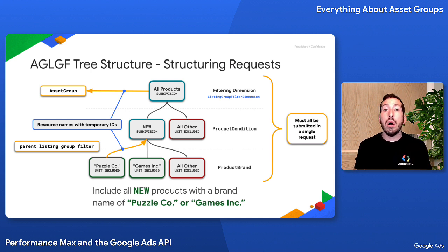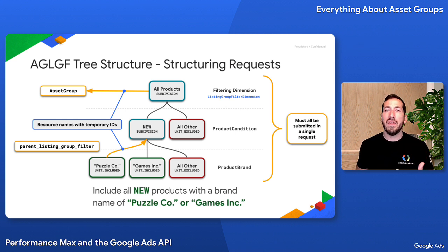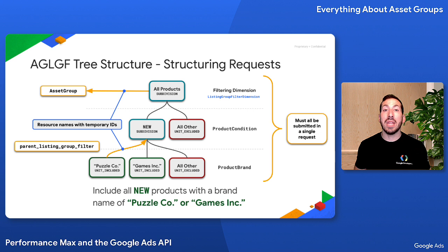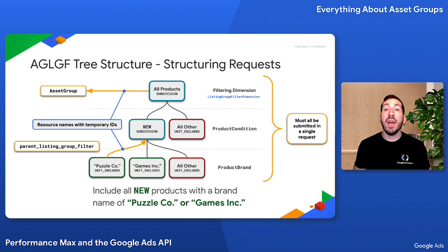For example, include all new products of the food brand sold online. This approach simplifies the construction of the tree. You should try to find the simplest version of the tree that accomplishes your objective, and using this exercise can help reach that end. In addition, you can define these parameters for your tree and write code that automatically creates the tree based on your inputs.